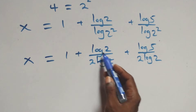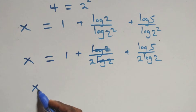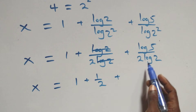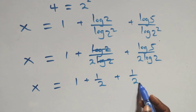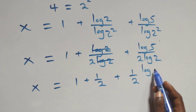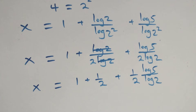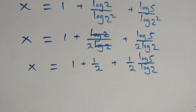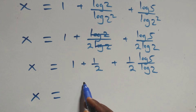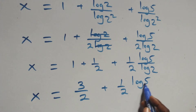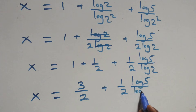That is here — log 2 cancels with each other. This becomes x equals to 1 plus 1 over 2, and plus. Here also we can write this as 1 over 2 times log 5 over log 2. Then next step here, we have x equals to 1 plus 1 over 2.